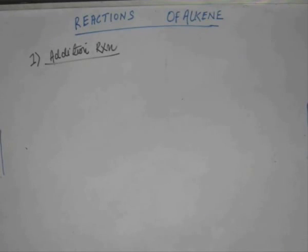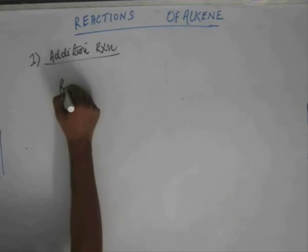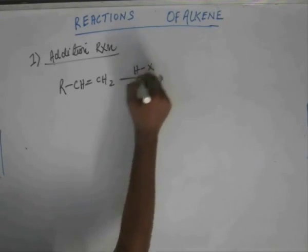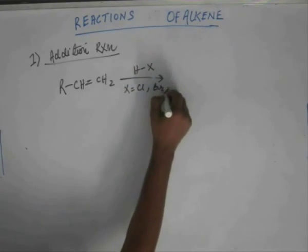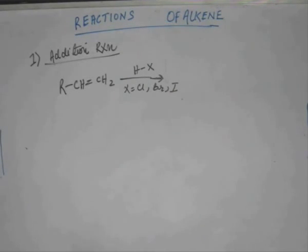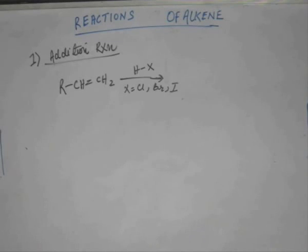There will be addition reactions of various reagents and we will begin with HX. Let's begin with addition of HX and take a simple alkene. X here can be chlorine, bromine, or iodine. Fluorine we will not take here because HF is a very weak acid and fluoride ion is not a very stable conjugate base. So we avoid HF and will take HCl, HBr, and HI.